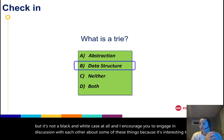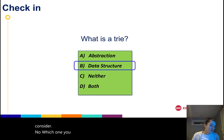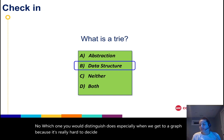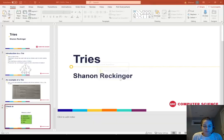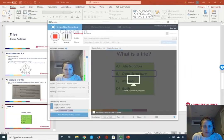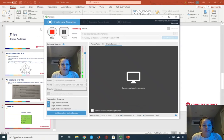You know, which one you would distinguish it as, especially when we get to a graph, because it's really hard to decide with a graph if it's an abstraction or a data structure. Alright, that is all I have for tries.